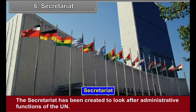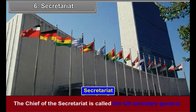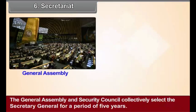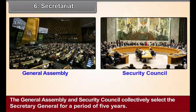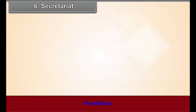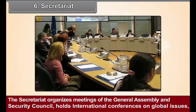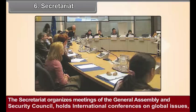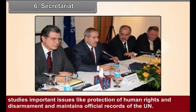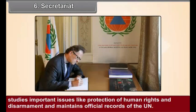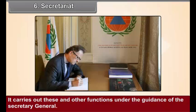Secretariat — Structure: The Secretariat has been created to look after the administrative functions of the UN. The Chief of the Secretariat is called the UN Secretary General. The General Assembly and Security Council collectively select the Secretary General for a period of 5 years. Functions: The Secretariat organizes meetings of the General Assembly and Security Council, holds international conferences on global issues, studies important issues like protection of human rights and disarmament, and maintains official records of the UN. It carries out these and other functions under the guidance of the Secretary General.